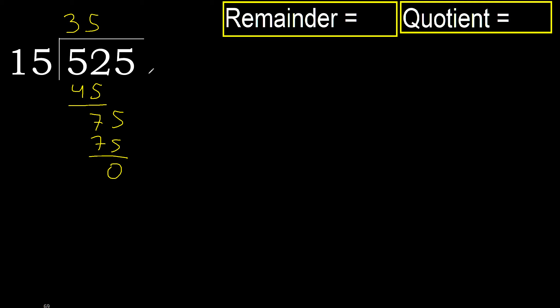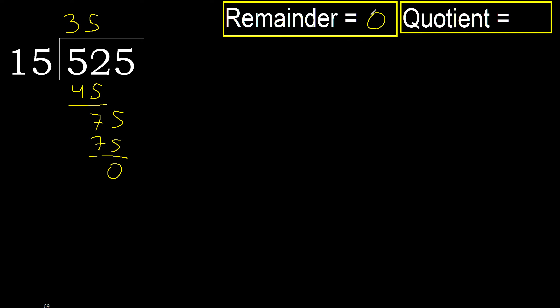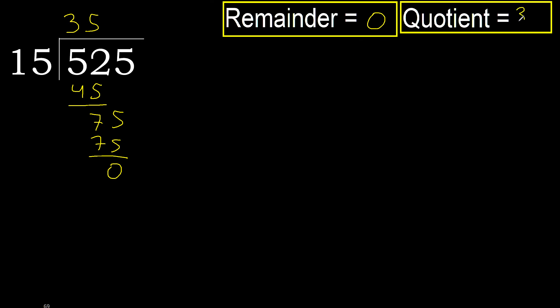There is no next number, therefore finished. 525 divided by 15 is 35.